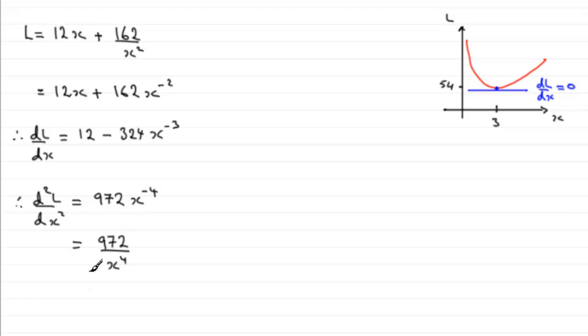And what we do is we substitute in the value that we're testing, and that value is x equals 3. And when we do that, let's just come down here, when we do that substitute x equals 3 into here, what do we actually get? Well, d²L by dx² equals 972 then divided by 3 to the power 4.